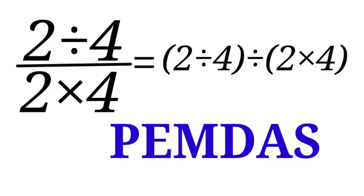M and D are on the same level in the order of operations. So when you have M and D in any question, you go from left to right and solve depending on which one comes first. If multiplication comes first, you multiply before dividing. If division comes first, you divide before multiplying. Then you move to A and S.